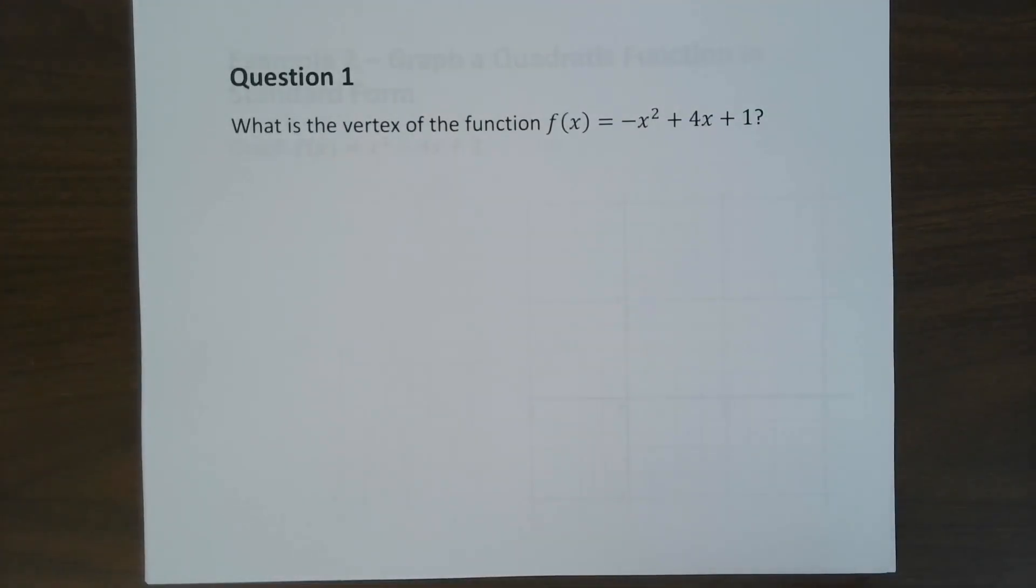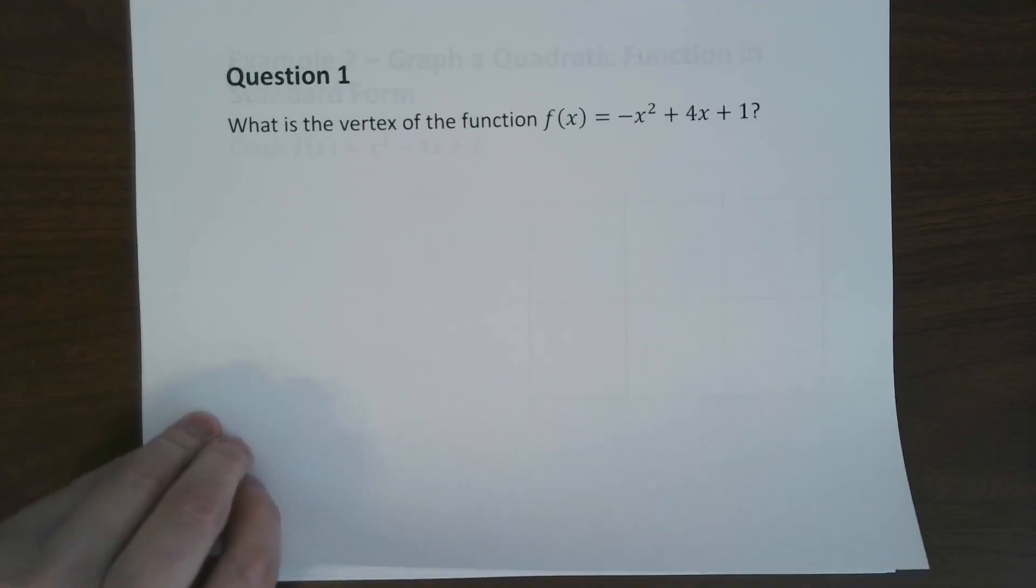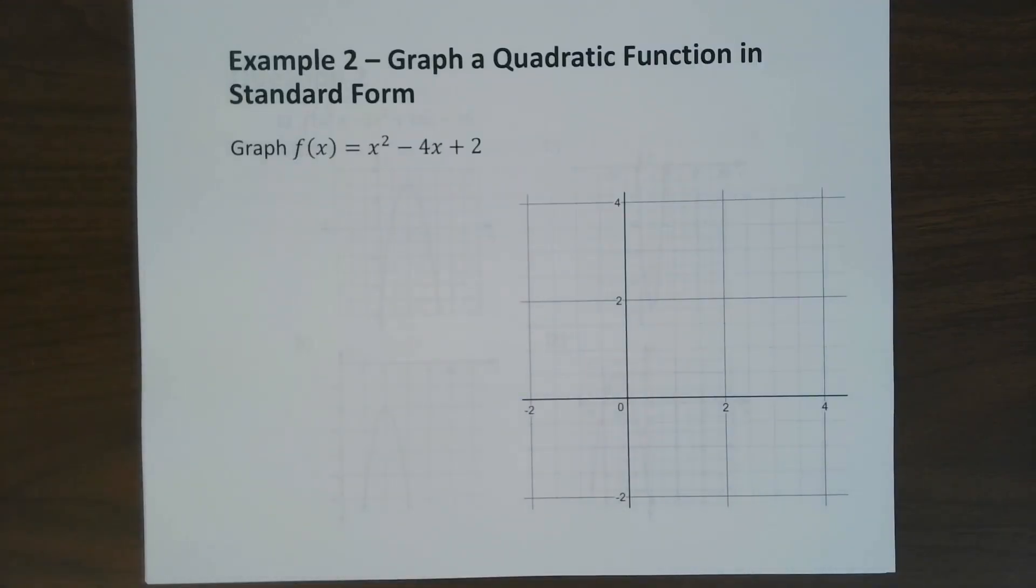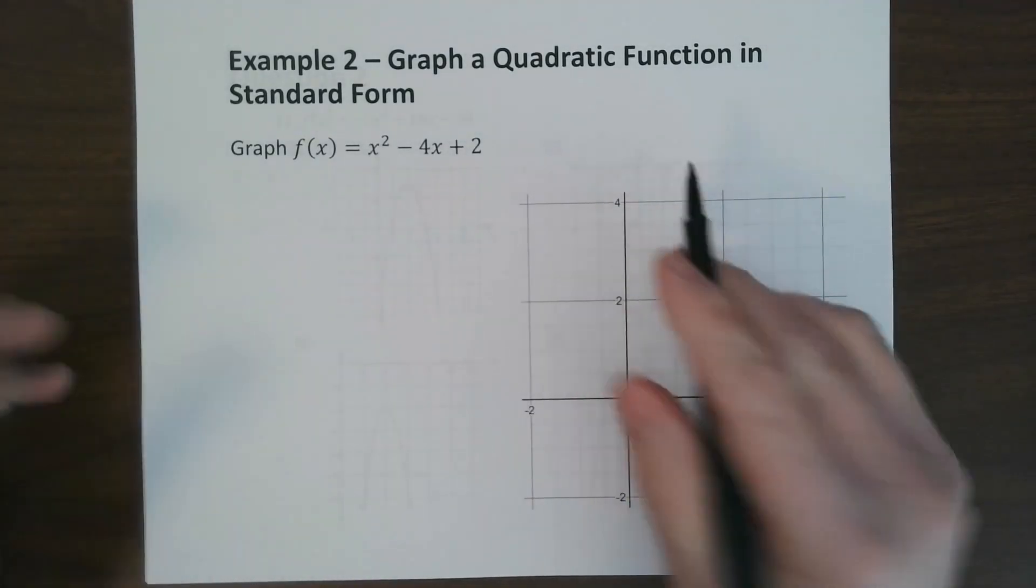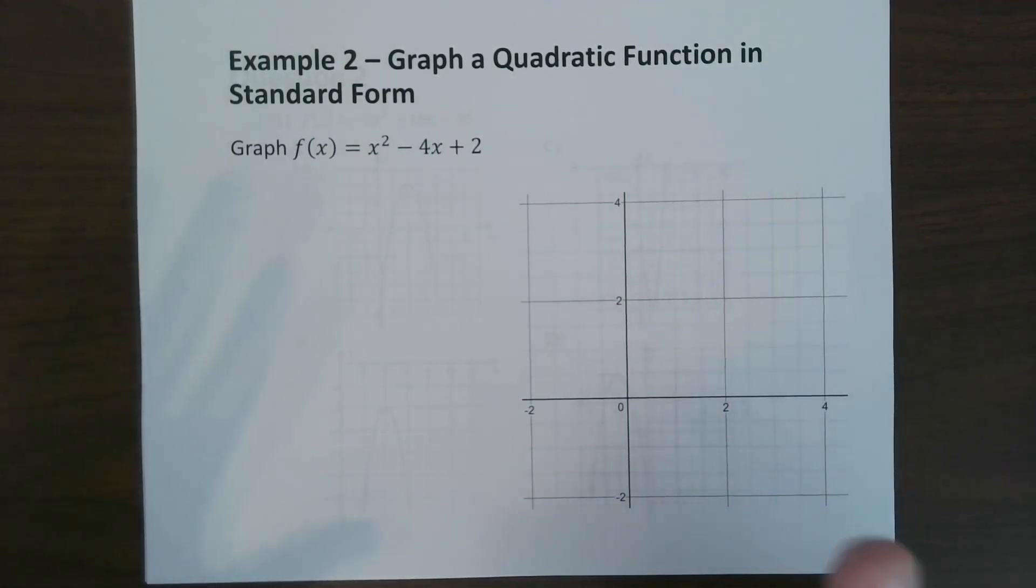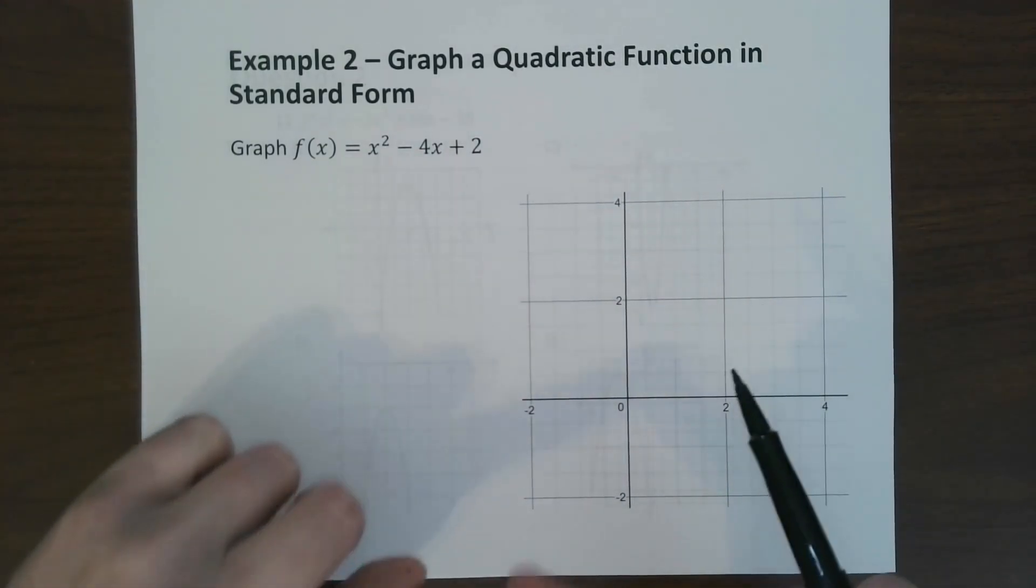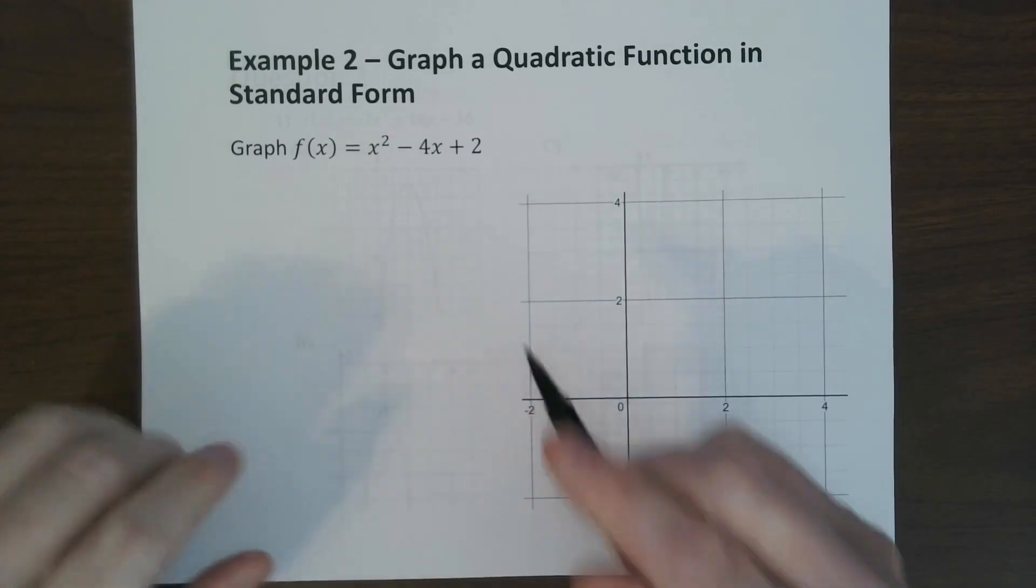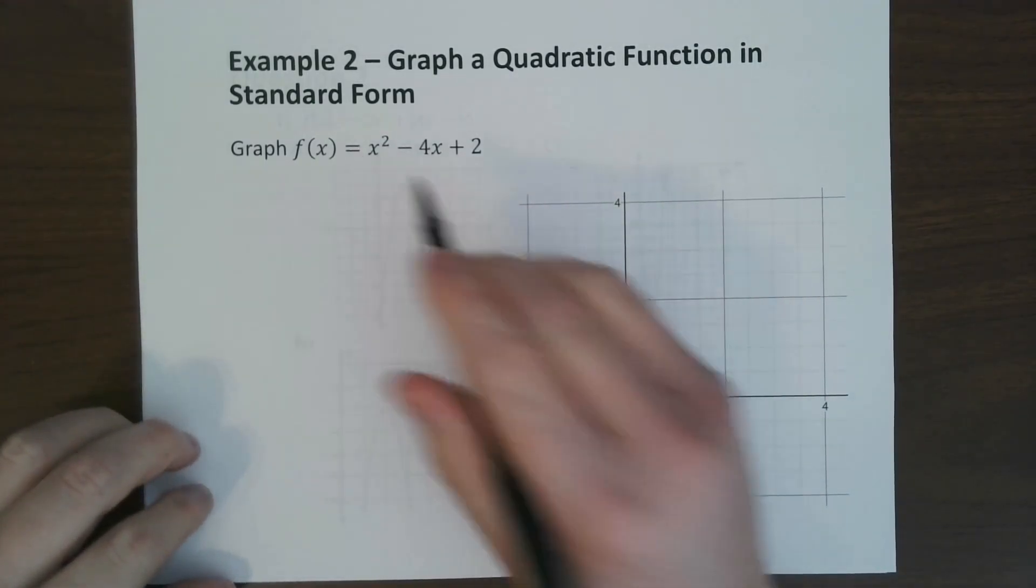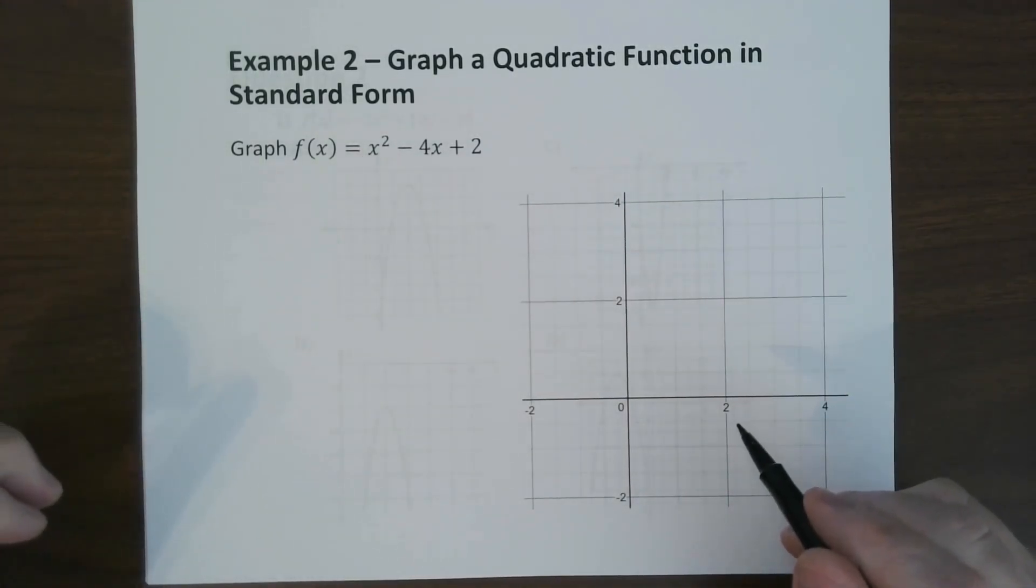So using those steps, go ahead and try question 1. So using the vertex form, which we just found, we just found how to find the vertex, we're going to graph the quadratic function in standard form. So we're going to follow the same steps. First thing we're going to do is find the vertex, and then we're going to use the a to graph it. It's going to make it a lot faster.